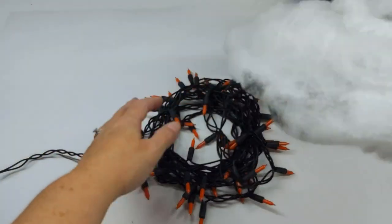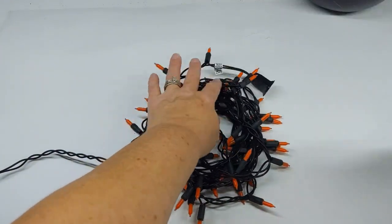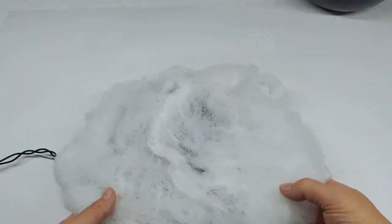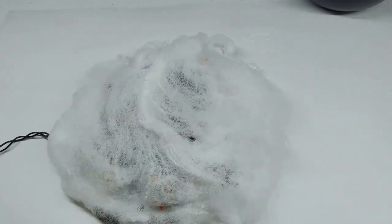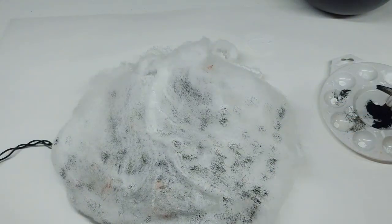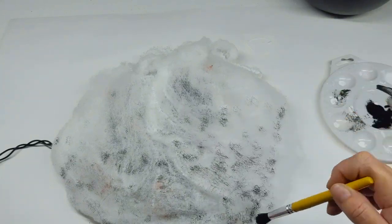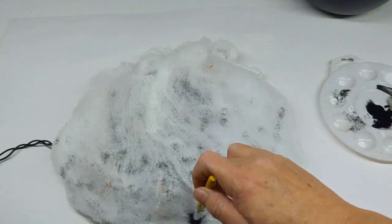I had these orange lights on hand, so I wound them into a circle. Then I cut out a piece of spider webs and covered them. I know this might seem a little crazy, but I took a paintbrush and dabbed black paint all over the webs. I wanted this to look like coals.